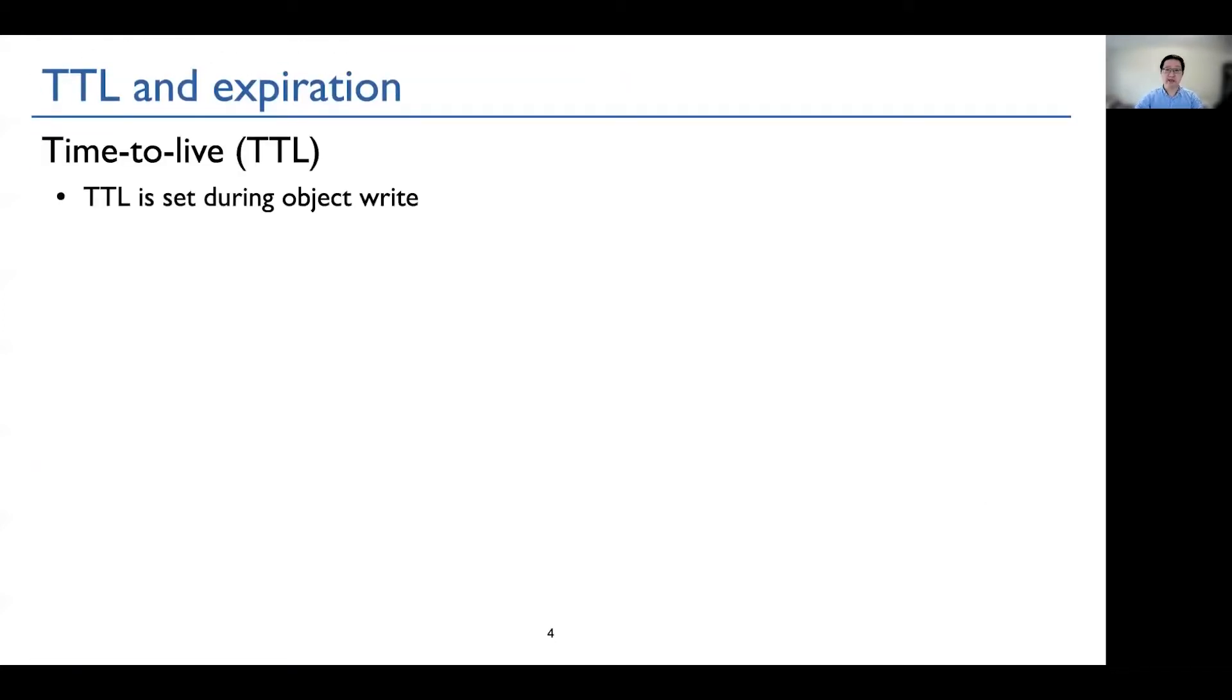TTL stands for Time to Live. It is set when the object is written into the cache. When an object expires, it cannot be used for serving. In other words, expired objects are not useful. We observe that short TTLs are widely used in production. Why?